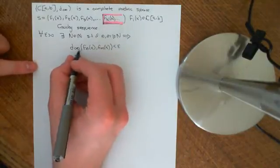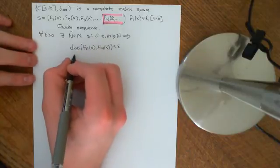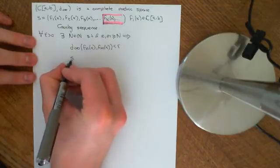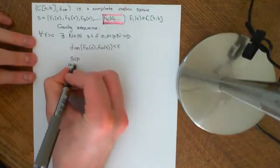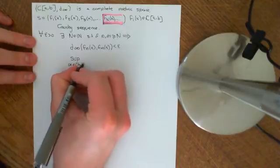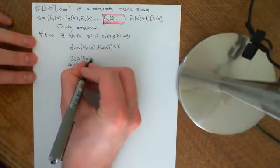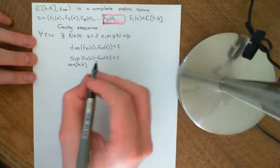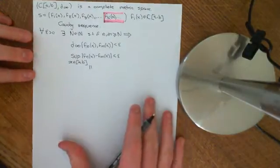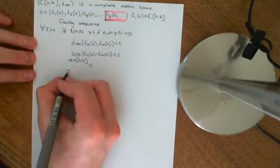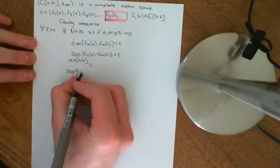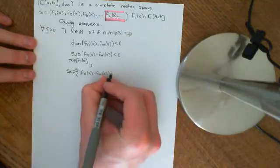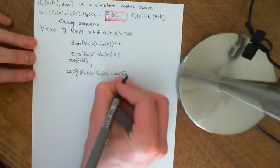So basically what it says is there is some point f_N(x) in this sequence where if you take any two terms beyond it — any f_n(x) and f_m(x) which are beyond f_N(x) — then the distance in this metric space between those two is going to be less than epsilon. Now let's write out what this distance means: it is the supremum over x in [A,B] of the modulus of f_n(x) minus f_m(x), and we know that that's going to be less than epsilon.